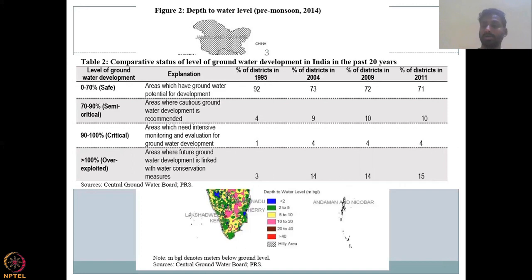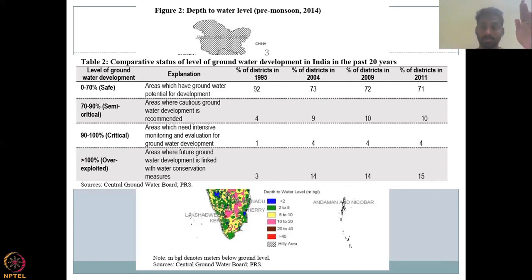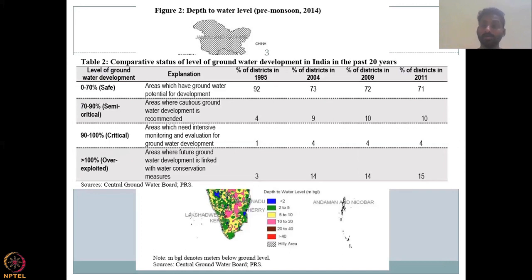So from September up to your summer, the peak monsoon has come, recharge has happened, and all the discharges happen — which means you are taking out groundwater. Using this data, you will look at some indexes made by the Central Groundwater Board.